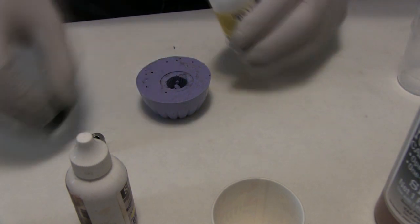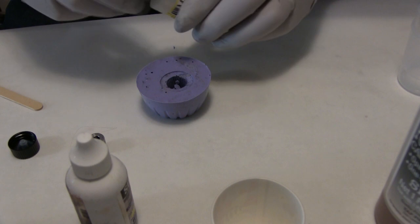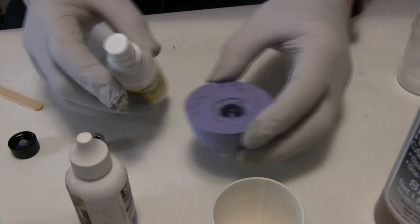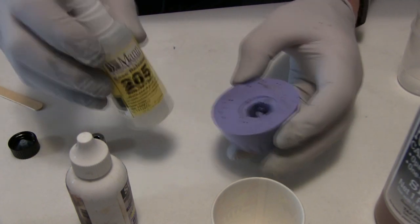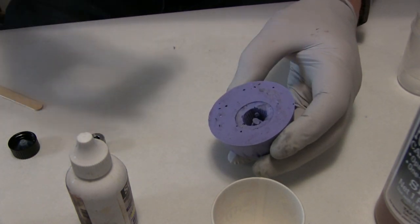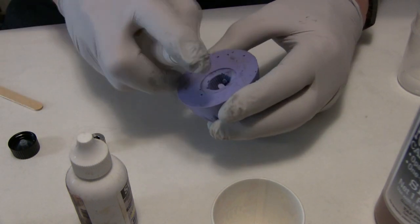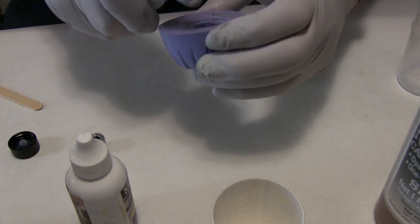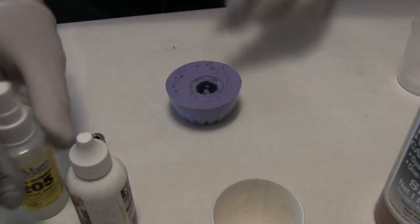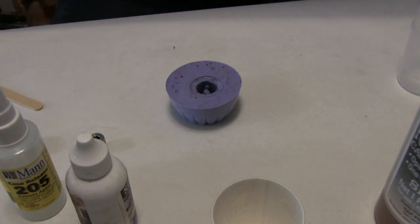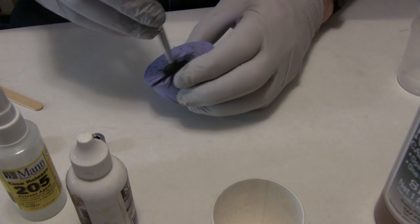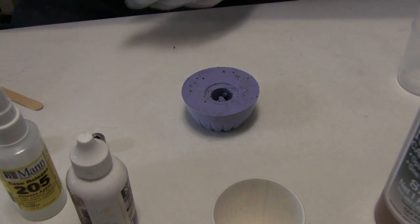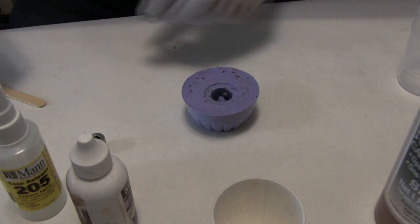The first step is to prepare the mold by spraying it with a mold release. I think this is some kind of silicone oil. I'm not sure. I use a brush to make sure that it gets all the way in. And then it needs to dry a few minutes.